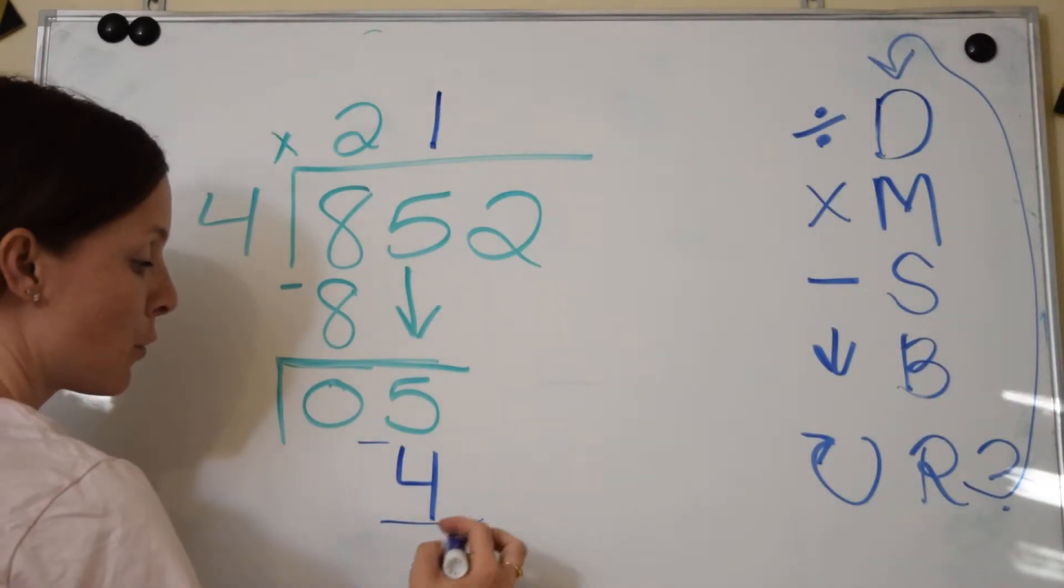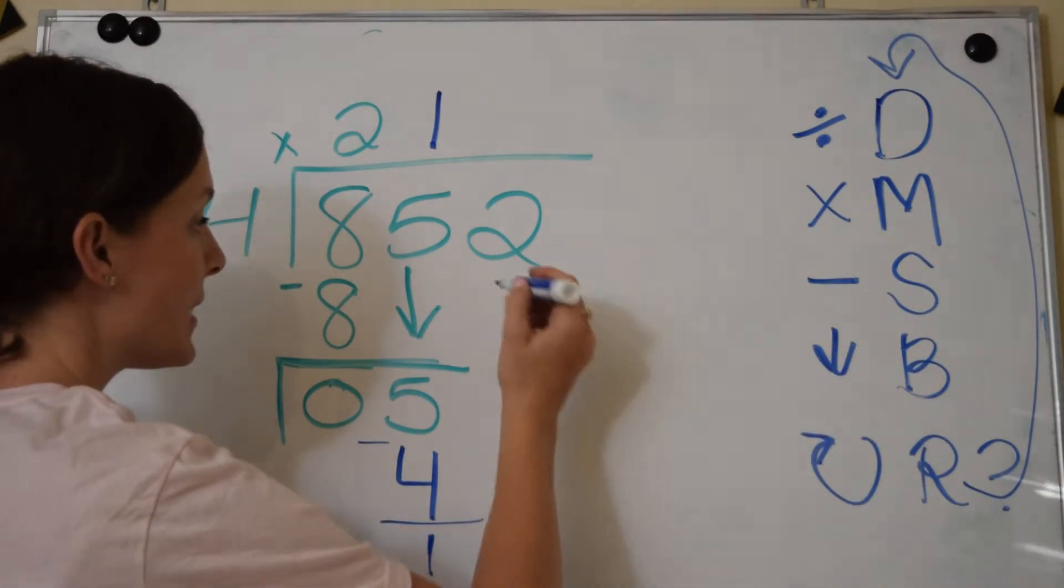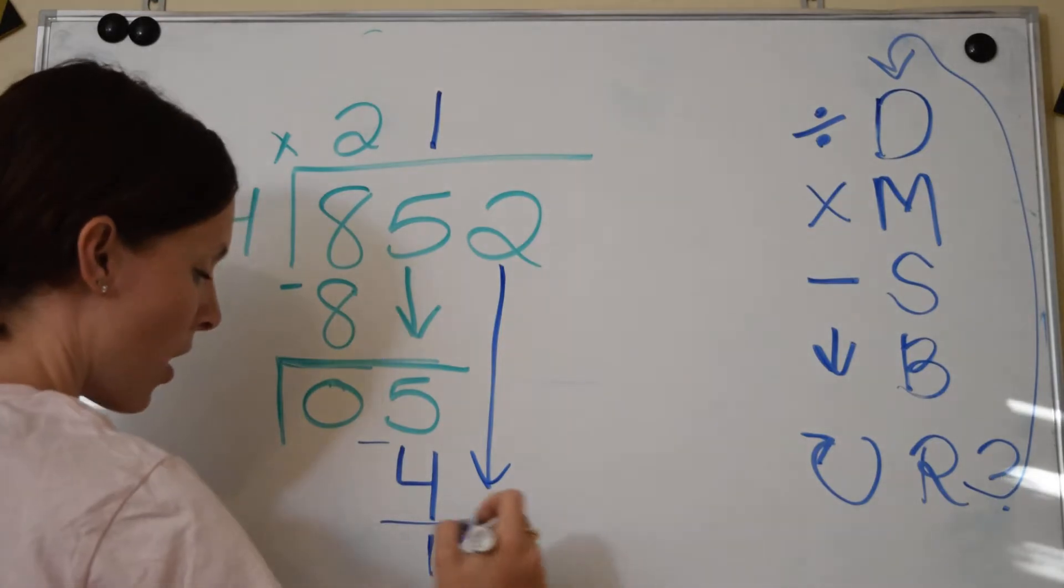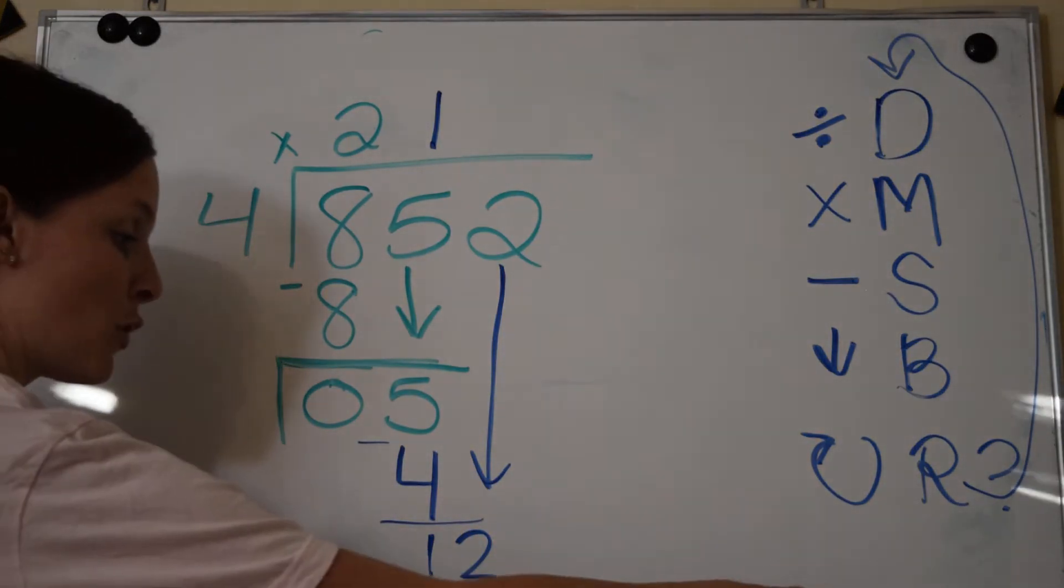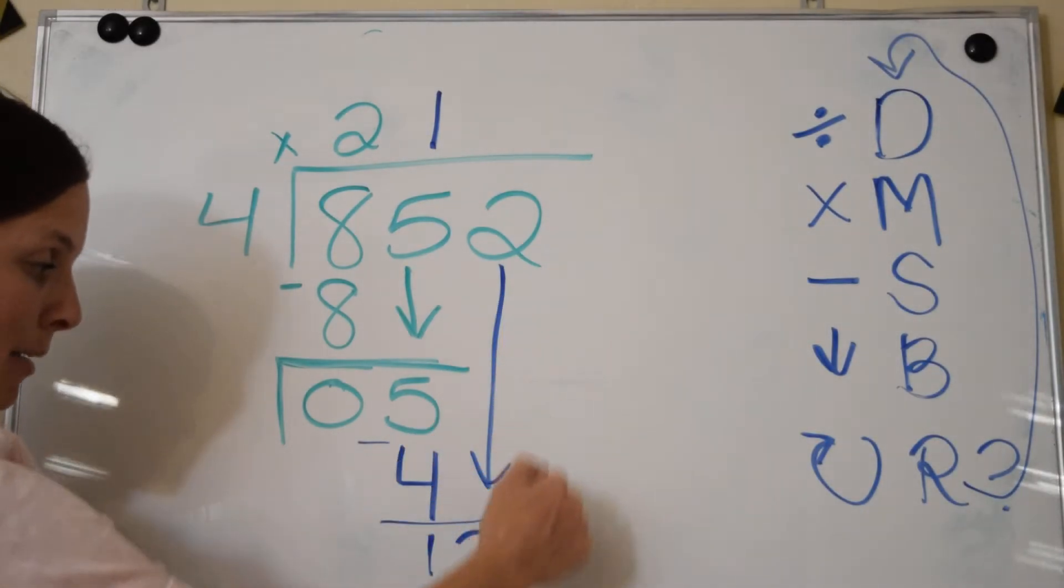Then I subtract: 5 minus 4 is 1. Then I bring down, and it's a 2. So now we're on a new number and we have a 12.